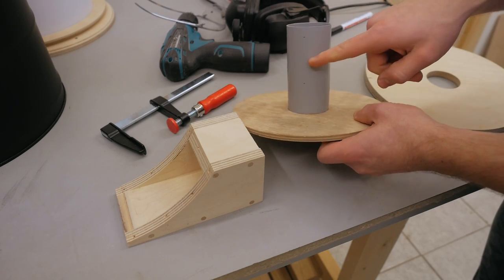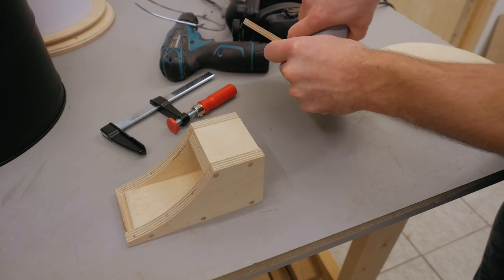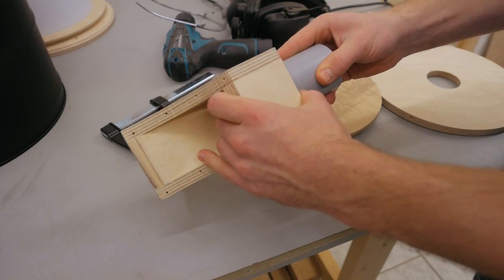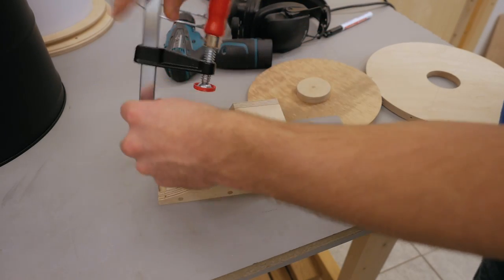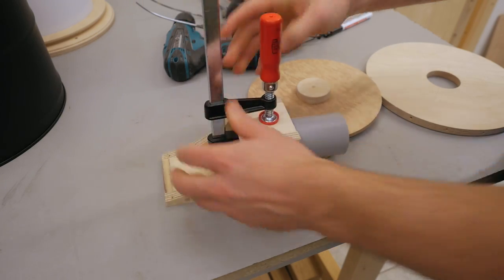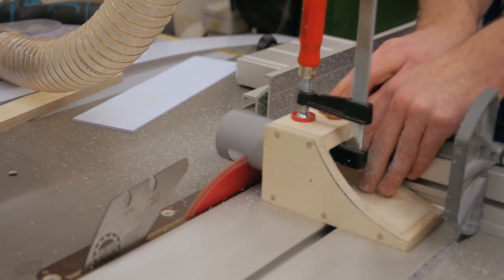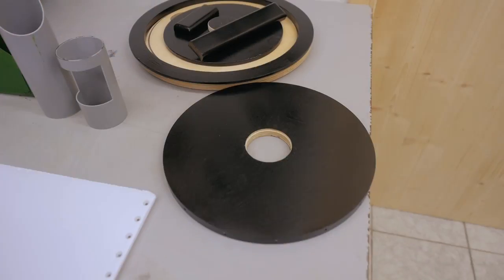And finally I need to cut the slot into this pipe, and to do that safely I'm gonna put it into the housing of the inlet pipe and clamp it there, and like so I can now cut the slot on the table saw.